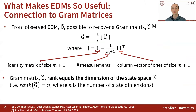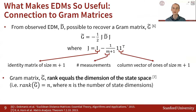When we already have an EDM D-tilde, we can obtain a gram matrix G-tilde through a process of matrix multiplication called double centering. For a more thorough explanation, I invite you to read citation 6. The important part of a gram matrix is that its rank equals the dimension of the state space. For example, if we are localizing in a three-dimensional state space, then we'd expect our recovered gram matrix to have a rank of 3.